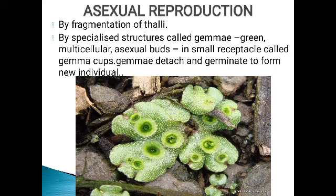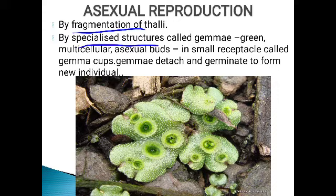Liverworts reproduce both asexually and sexually. Asexual reproduction occurs by fragmentation of the thalli — the thalli divide into fragments and each fragment can develop into a new liverwort. Another method of asexual reproduction is by the formation of specialized structures called gemma.